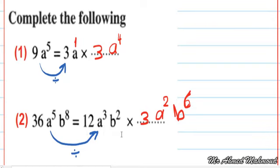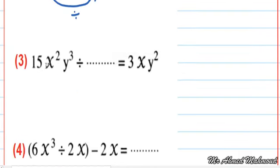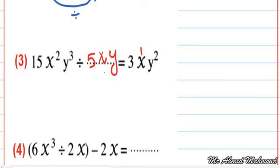Next: 15x power 2, y power 3 divided by the missing term equals 3x, y to the power of 2. Mental way: 15 divided by what equals 3? Answer: 5. x power 2 minus x power what gives x power 1? Answer: x power 1. y power 3 minus y power what equals y power 2? Answer: y power 1. So the missing term is 5xy. Alternatively, divide 15x power 2, y power 3 by the result 3xy power 2.